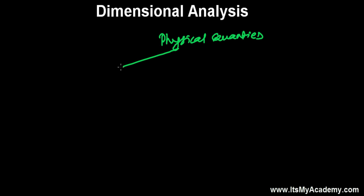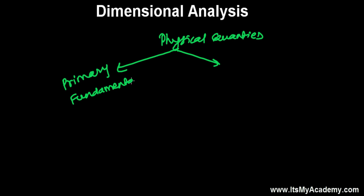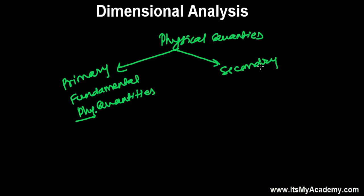These are all physical quantities, and in Physics, when studying the universe, we divide all physical quantities into two sections. The first is primary — or more commonly called fundamental physical quantities. The second is secondary, also called derived physical quantities.